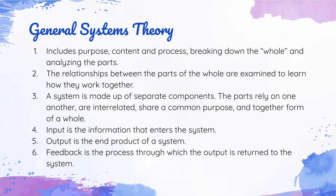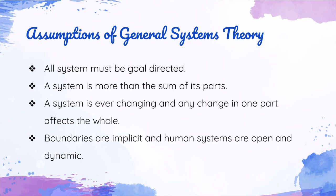General Systems Theory has the following assumptions: all systems must be goal-directed; a system is more than the sum of its parts; a system is ever-changing, and any change in one part affects the whole; boundaries are implicit; and human systems are open and dynamic.